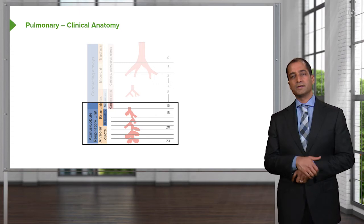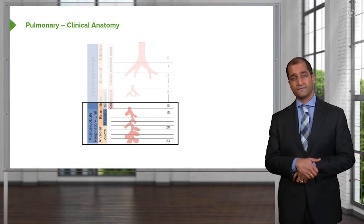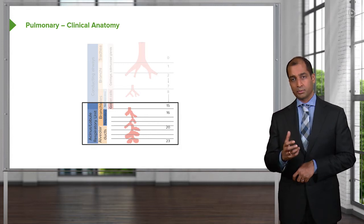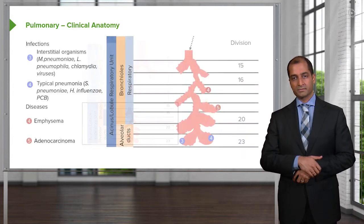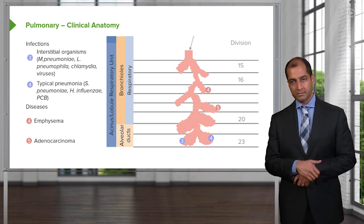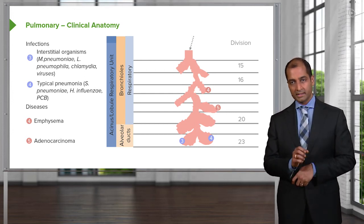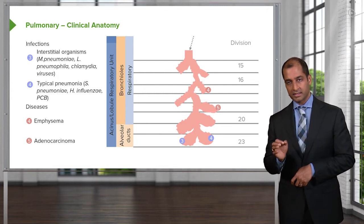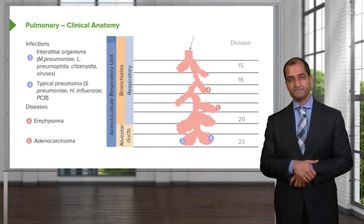Something else we'll do as we move forward is go through our alveolar gas formula. It's important that you understand what's done as an AA gradient clinically. Now, the last little distal portion — we'll go into more detail — and a couple of things I wish to point out that students tend to get confused with, but you will be clear after our discussion.